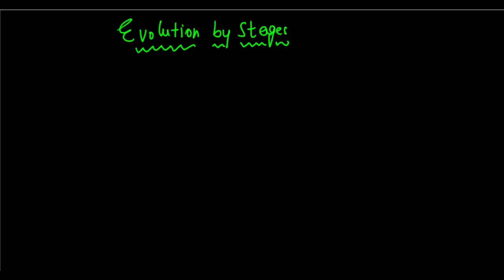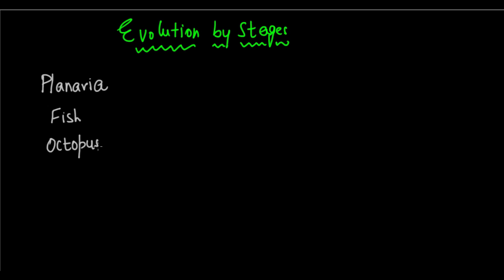Let's take some examples. For example, planaria — a microscopic, small, worm-like organism which reproduces through the process of regeneration. Then we have a more complex organism like a fish, then we can take an octopus, and then we can take some land animal, a terrestrial animal, for example a cat.